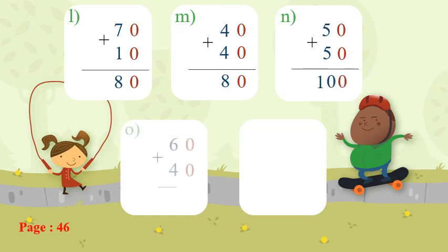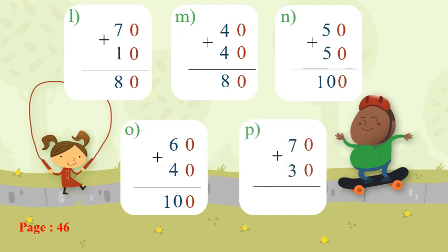Number: 60 plus 40. Ones plus ones, tens plus tens. Zero plus zero equals zero. Six plus four equals ten, so this will be one hundred. Next: zero plus zero equals zero. Seven plus three — after seven: eight, nine, ten — this will be one hundred.